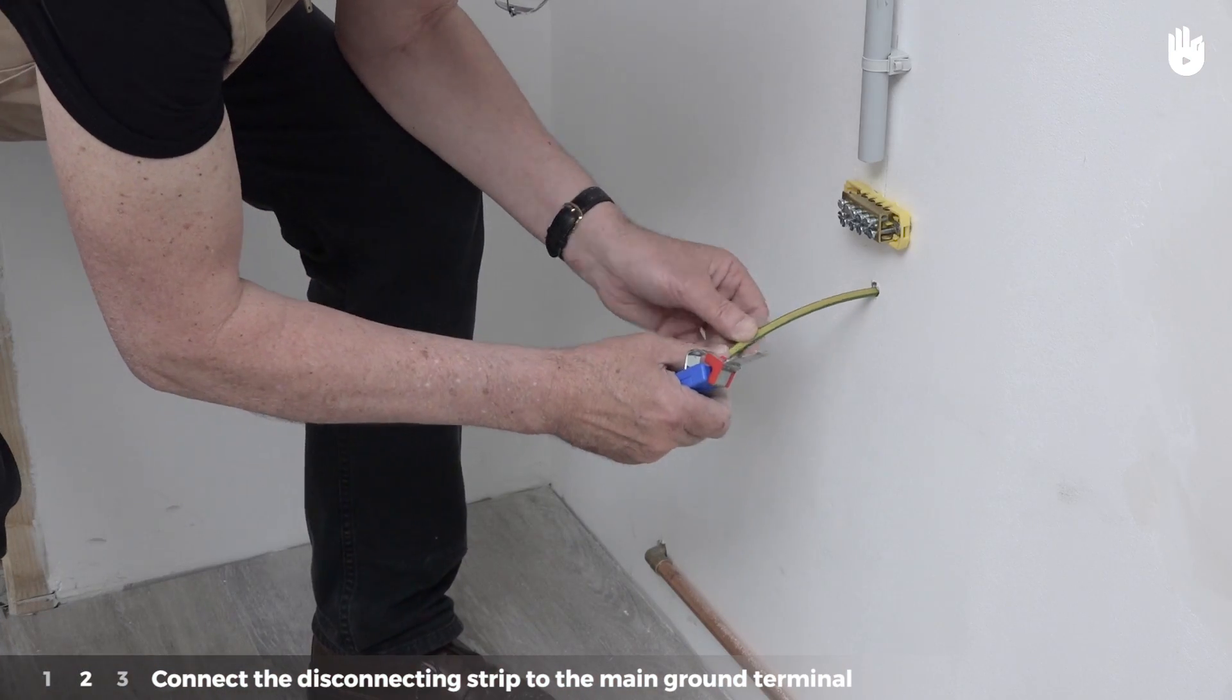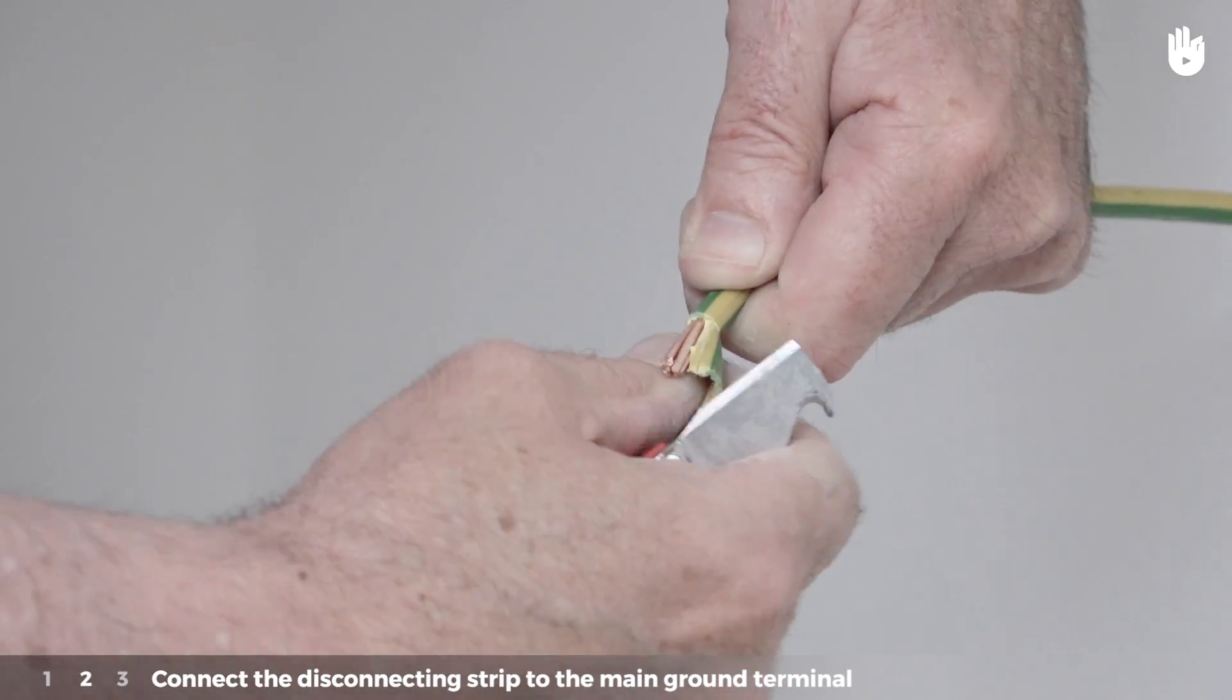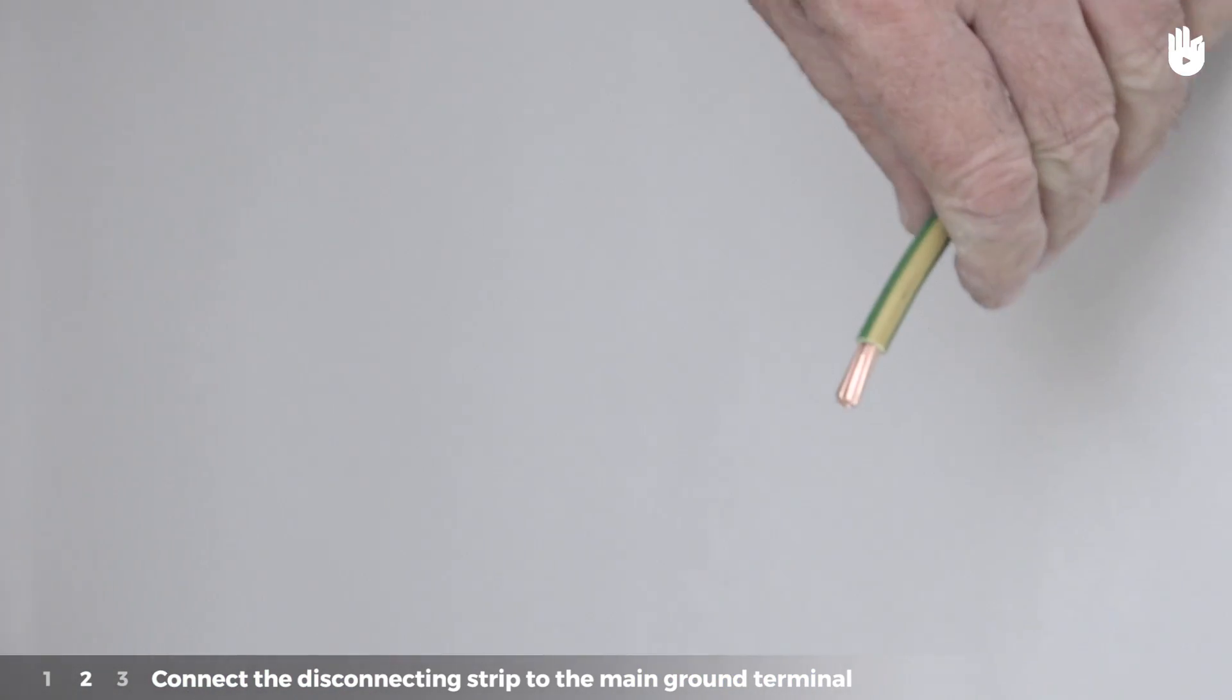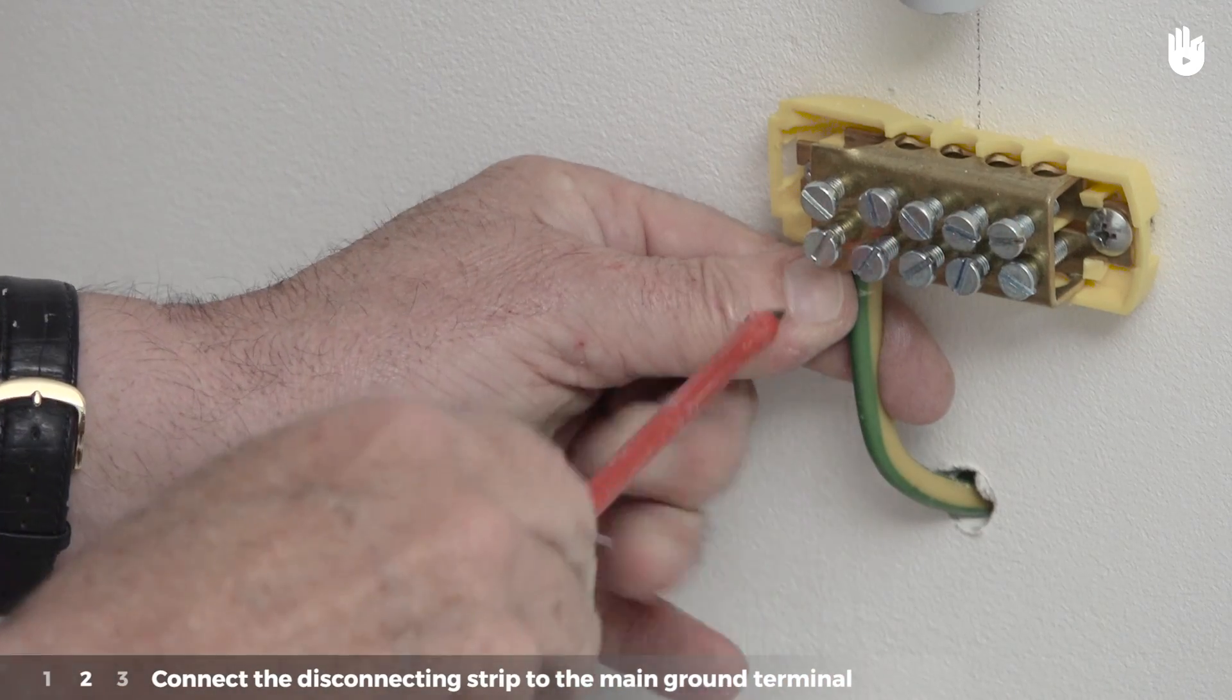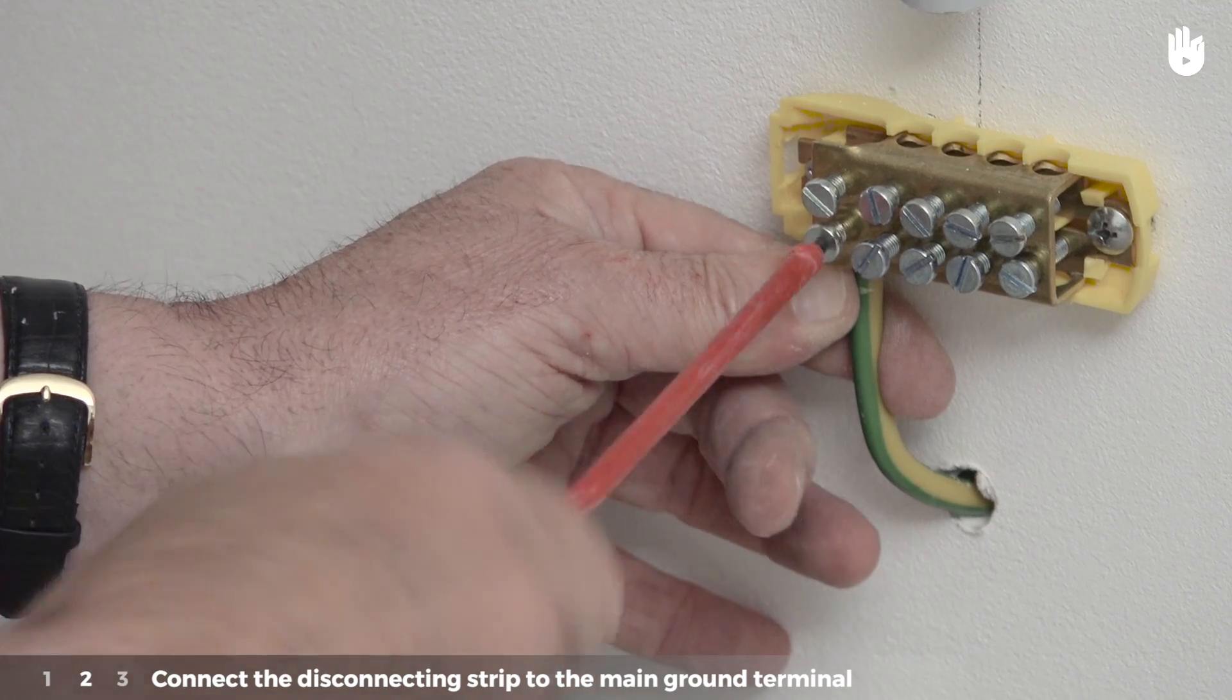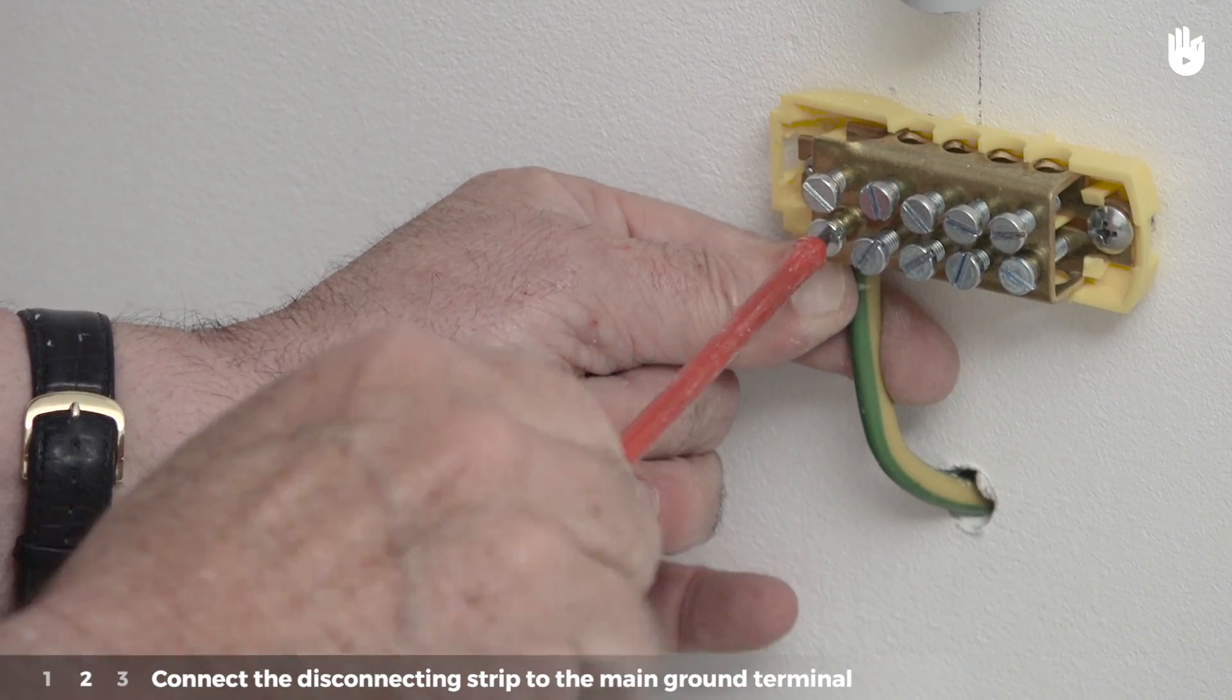Insert this conductor into the hole. Strip the end of the wire. Connect the conductor to the main ground terminal. Insert the electrical wire into the terminal and then screw them in.